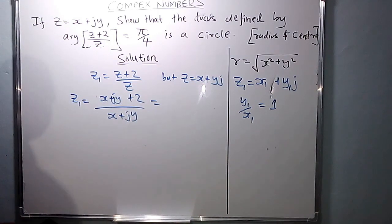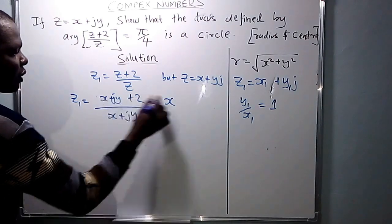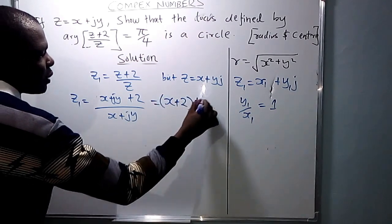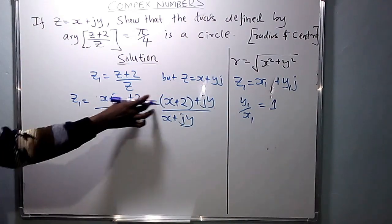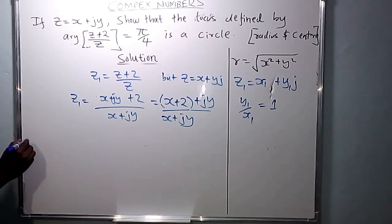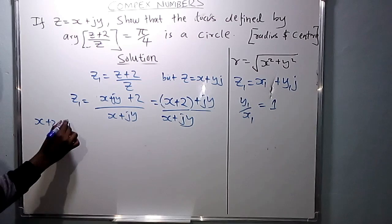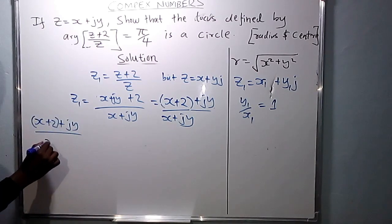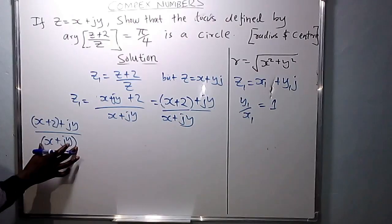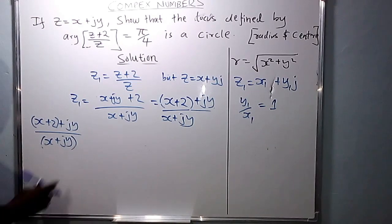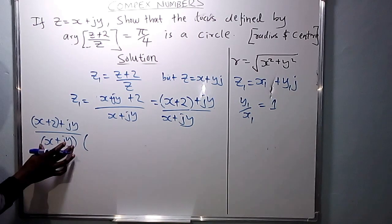So Z1 equals (X + JY) plus 2 over (X + JY). Rearranging — real parts together, imaginary parts together — we have real terms (X+2) and imaginary term JY in the numerator over (X + JY). To express Z1 in the form X1 plus JY1, we need to rationalize by multiplying by the complex conjugate.